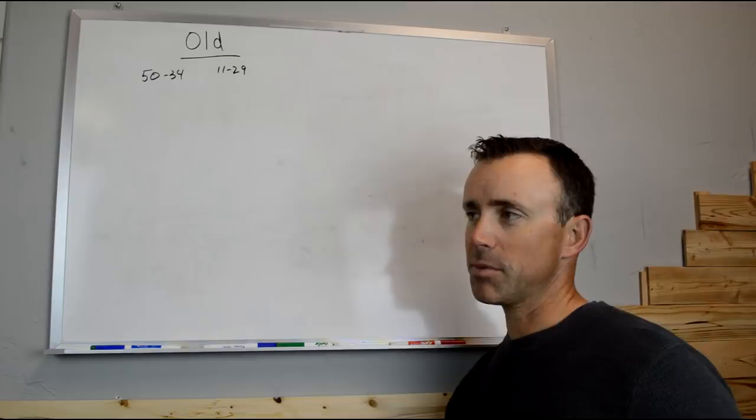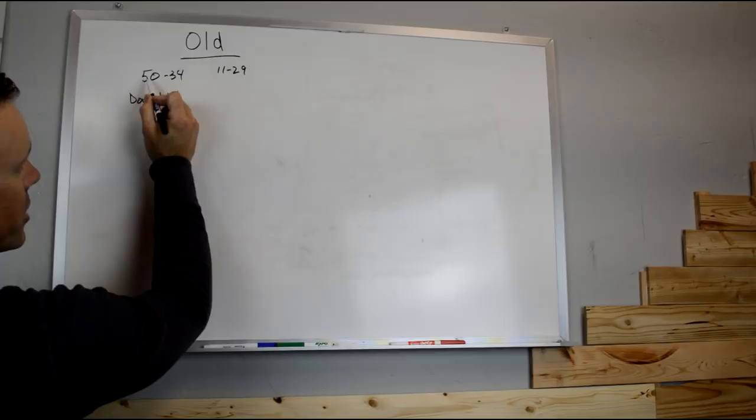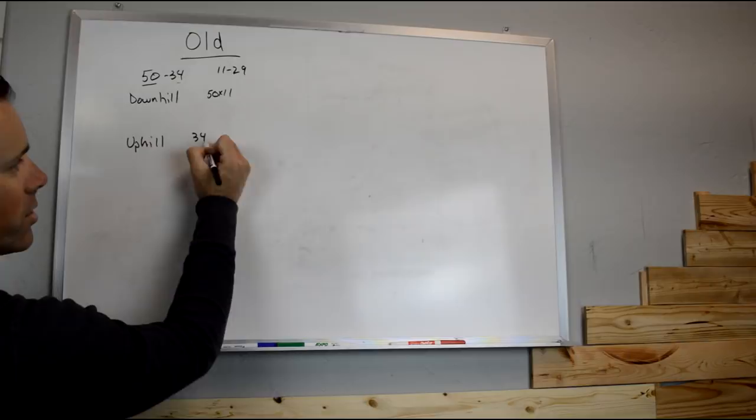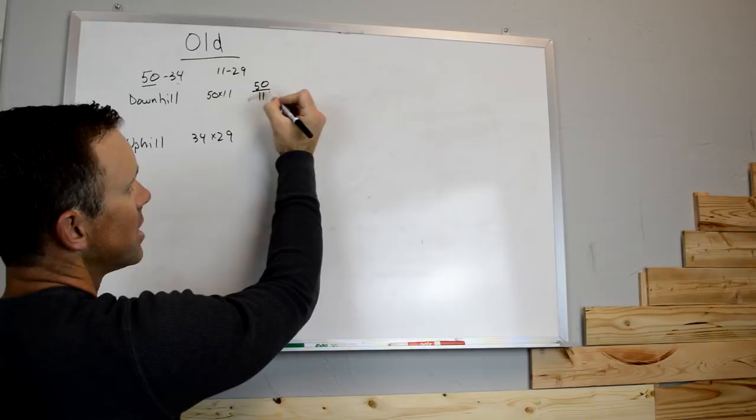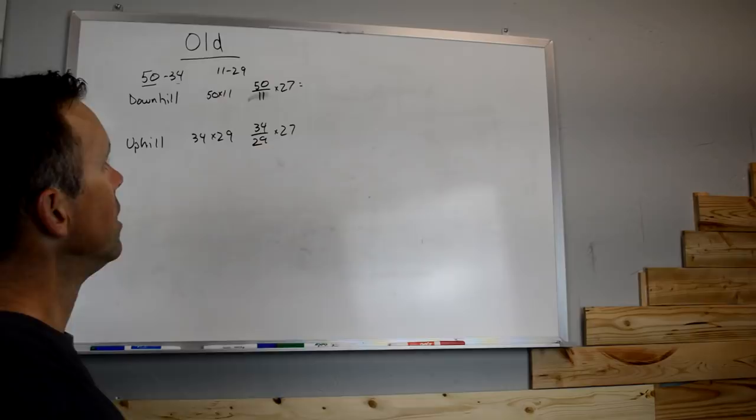So what we need to figure out is first his downhill gear. And that's actually going to be this 50 matched to the 11, so it's a 50 by 11. And then his uphill or his climbing gear is going to be this 34 in the front and the 29 in the back. So here's where I start, we just do this really basic. We're just going to take 50 divided by 11, and I just multiply by 27 just to get a rough estimate here. And then I'll take the uphill gear 34 divided by 29 also times 27.